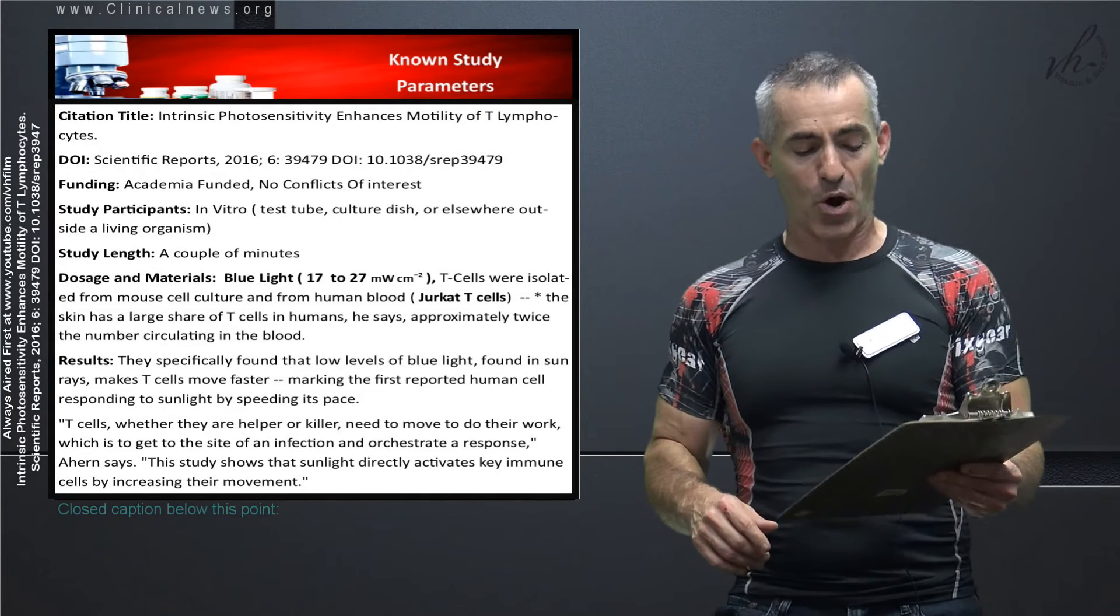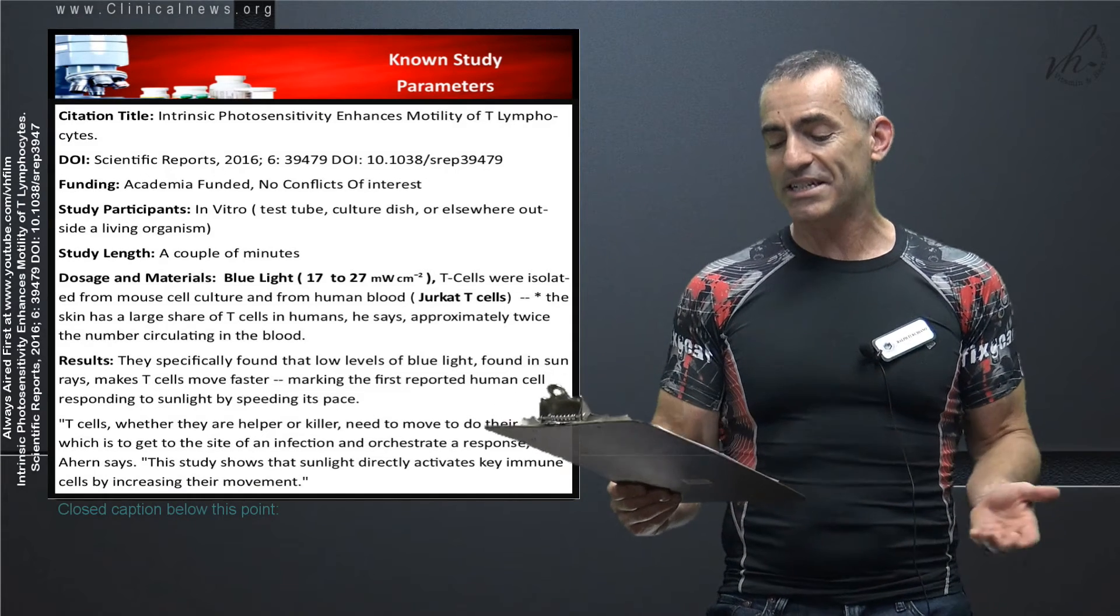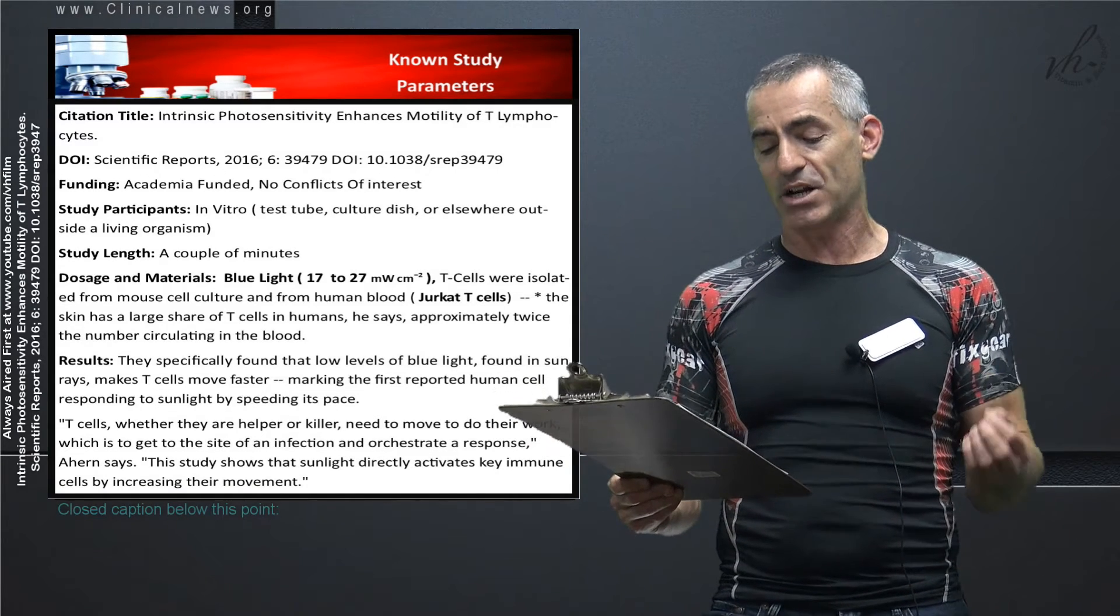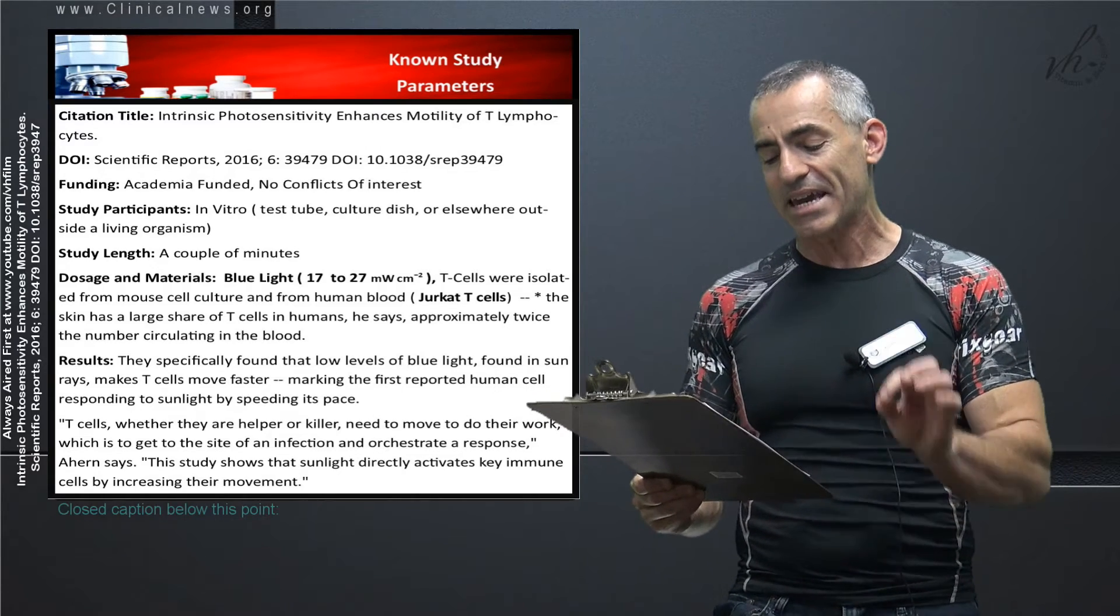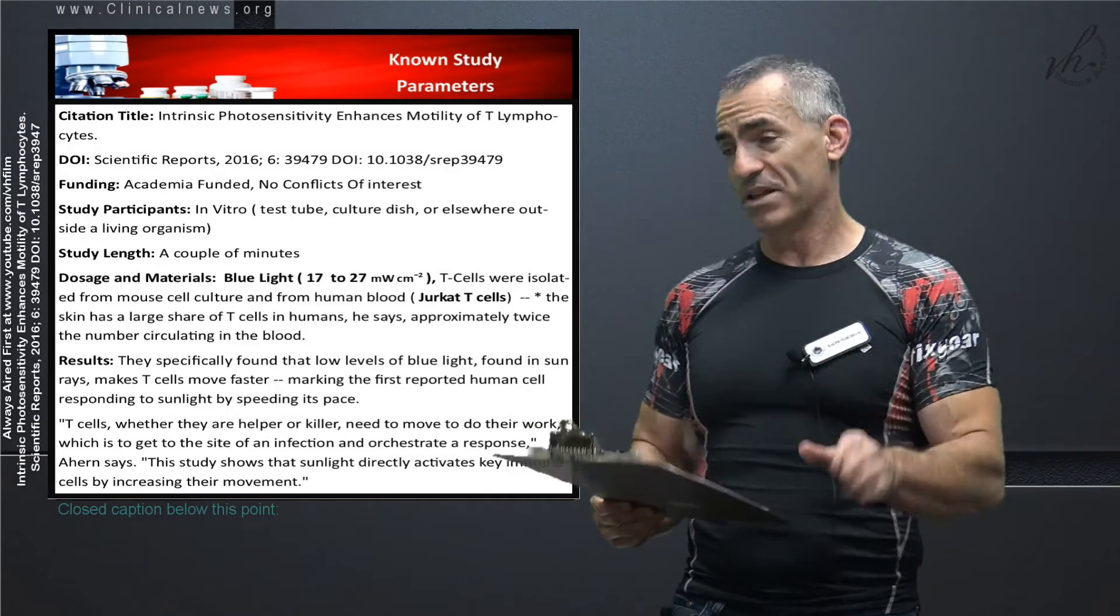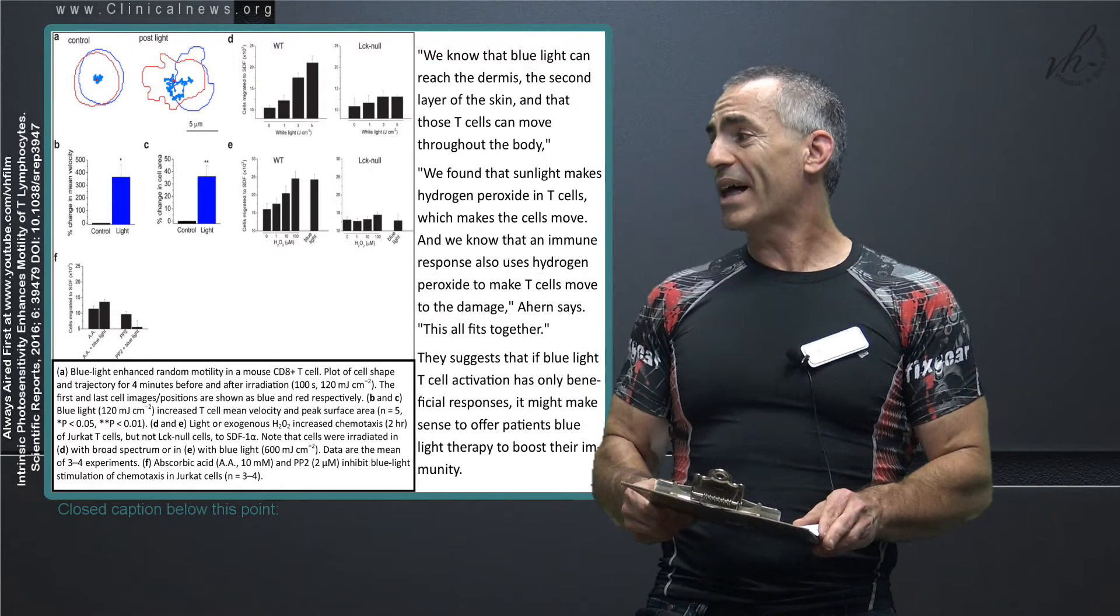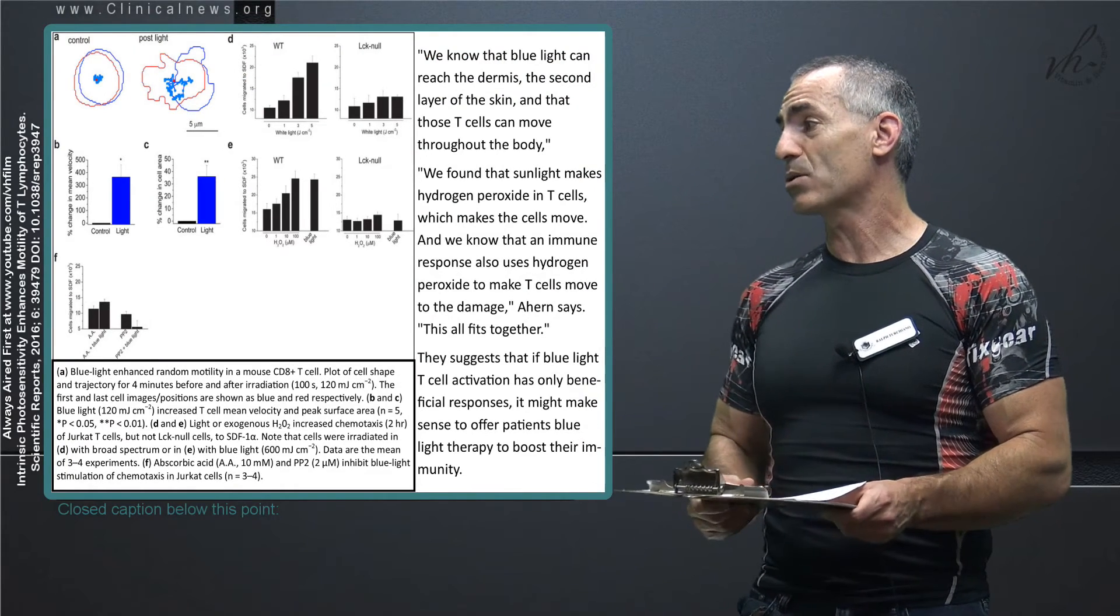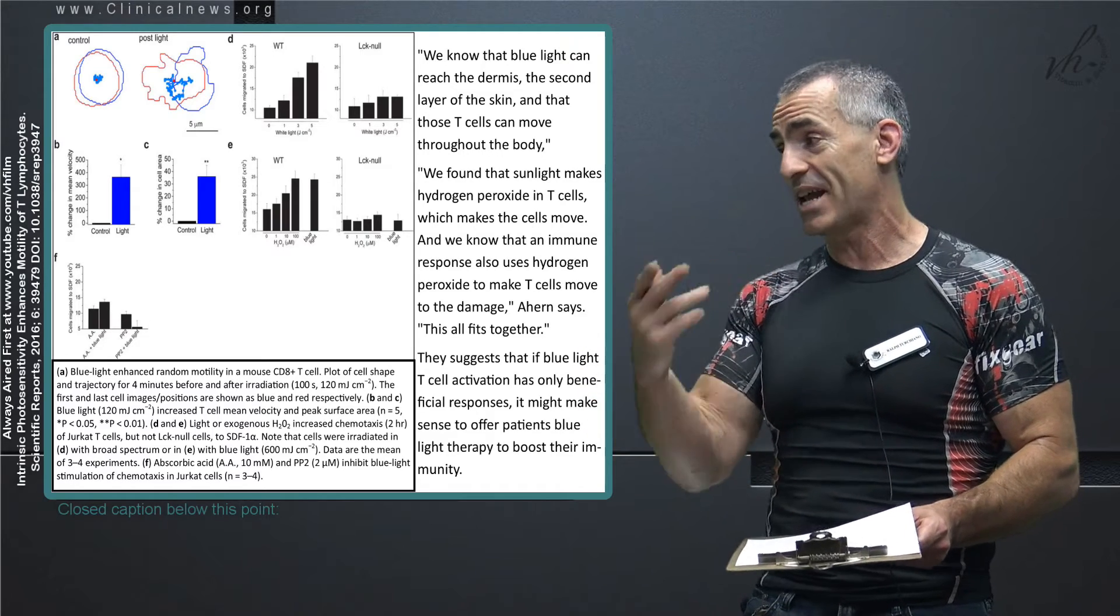T cells, whether they are helper or killer, need to move to do their work, which is to get to the site of infection and orchestrate a response. This study shows that sunlight directly activates key immune cells by increasing their movement. To go further into research as follows: we know that blue light can reach the dermis, the second layer of the skin, and those T cells can then move throughout the body as we stated.